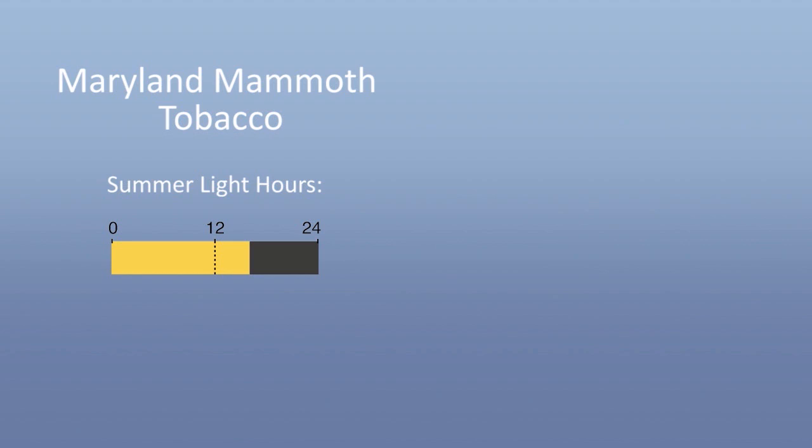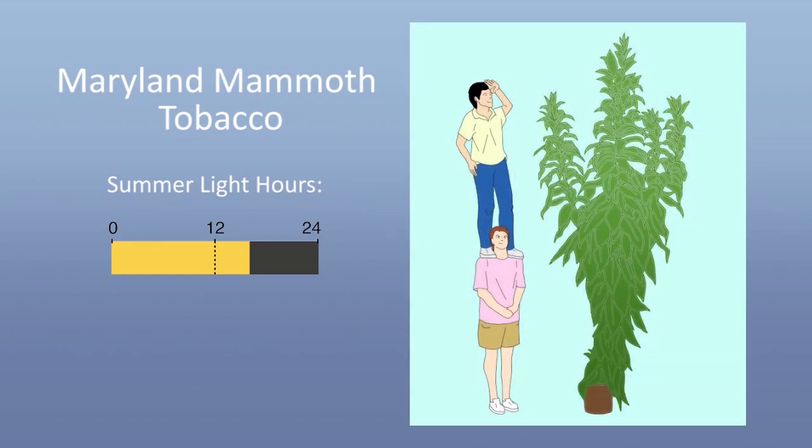A similar behavior is observed with the emblematic Maryland Mammoth variety of tobacco. When artificially kept in summer-like conditions, it will grow huge without providing any flowers.